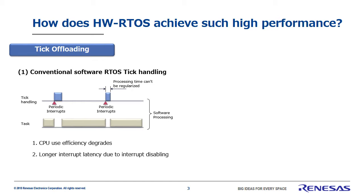Also, the tick is the RTOS internal processing for measuring time, and the more precise that clock is, the better. Precision here refers to the interval between the periodic interrupts, and the shorter that interval is, the better the system is. However, if you shorten that interval, the tick process occurrence rate increases, meaning it's not possible to shorten it very much. So there is a limit to how precise you can make the clock, which is another serious issue.